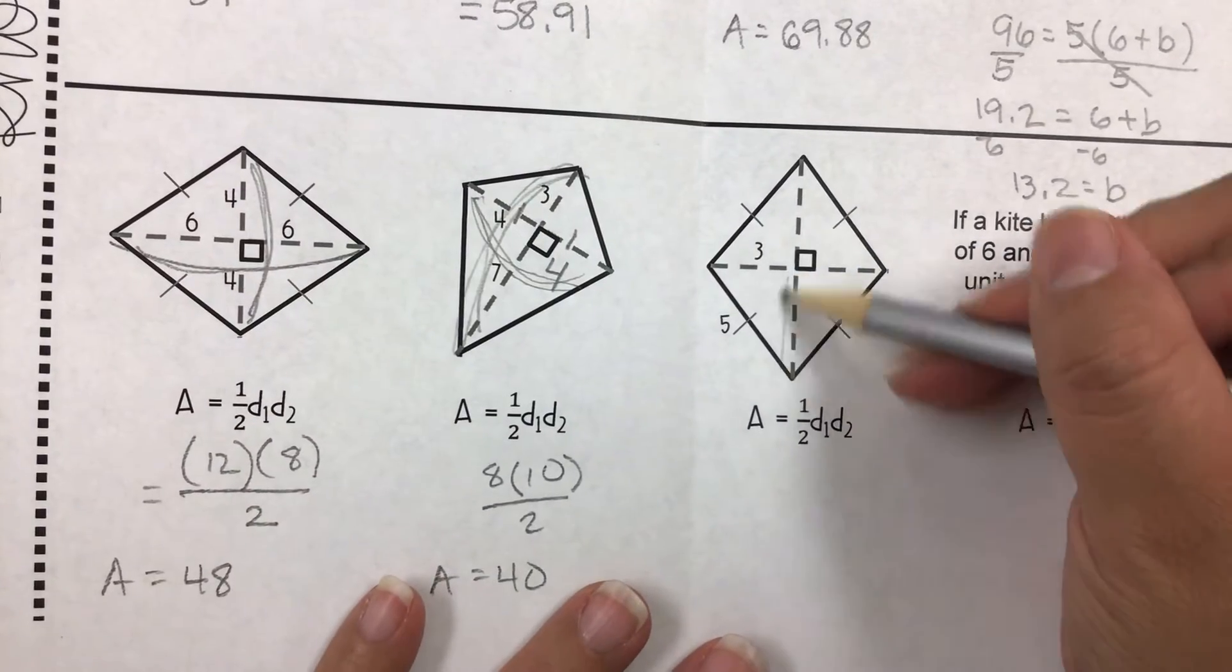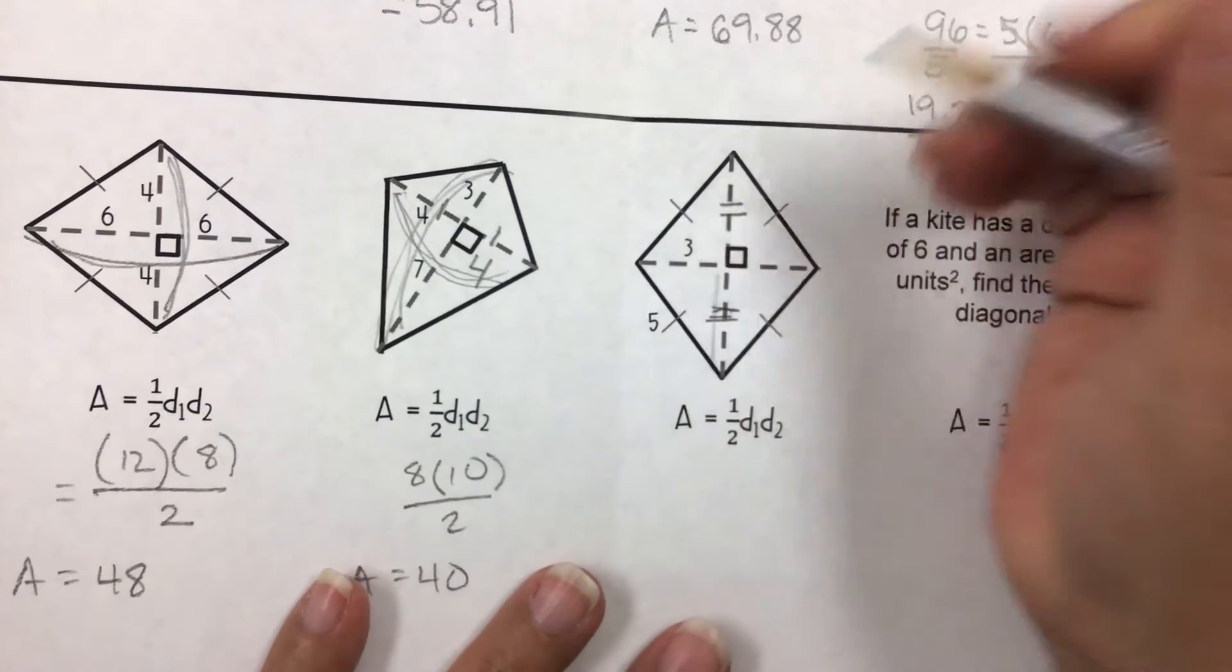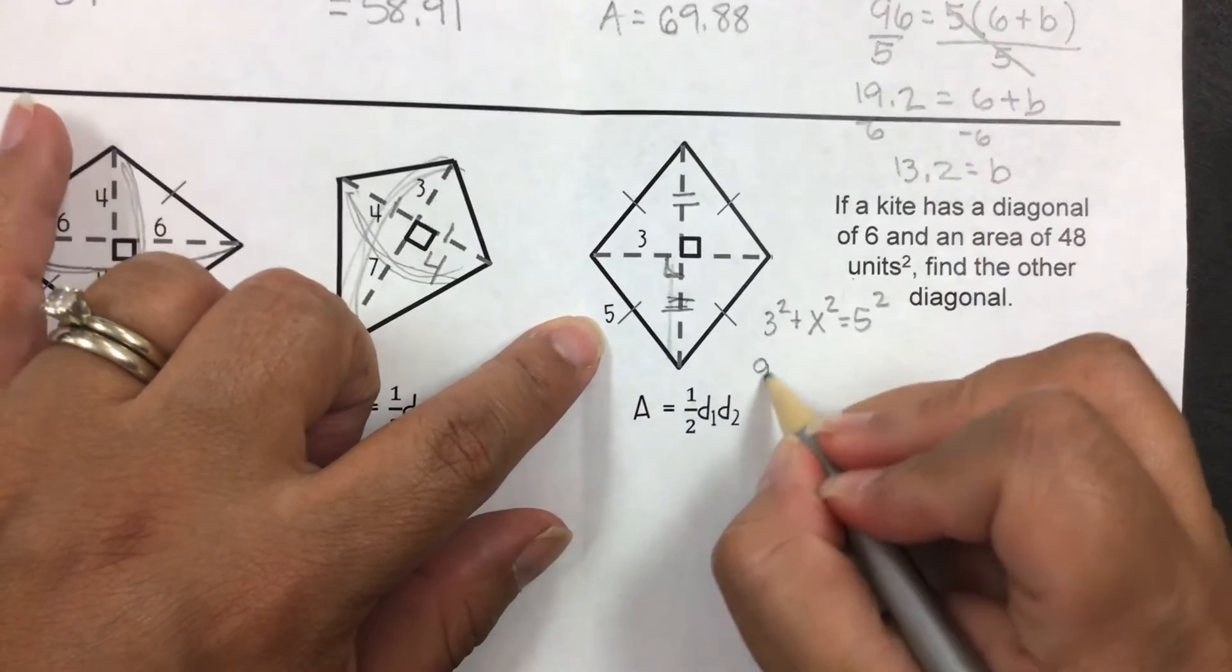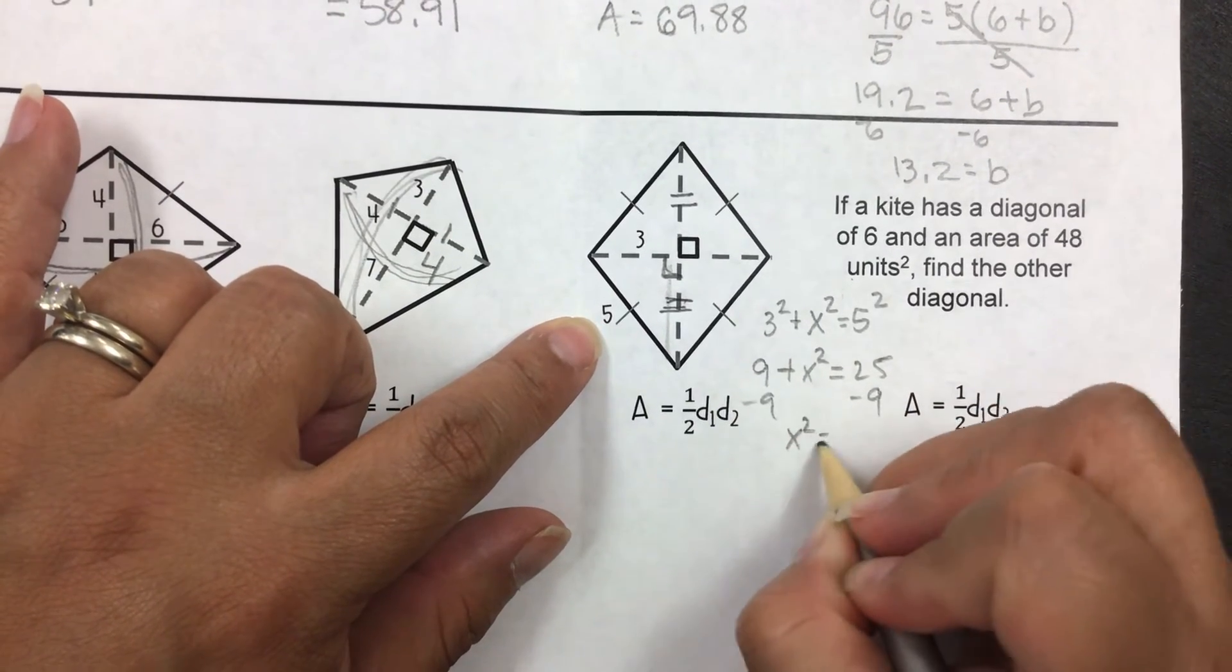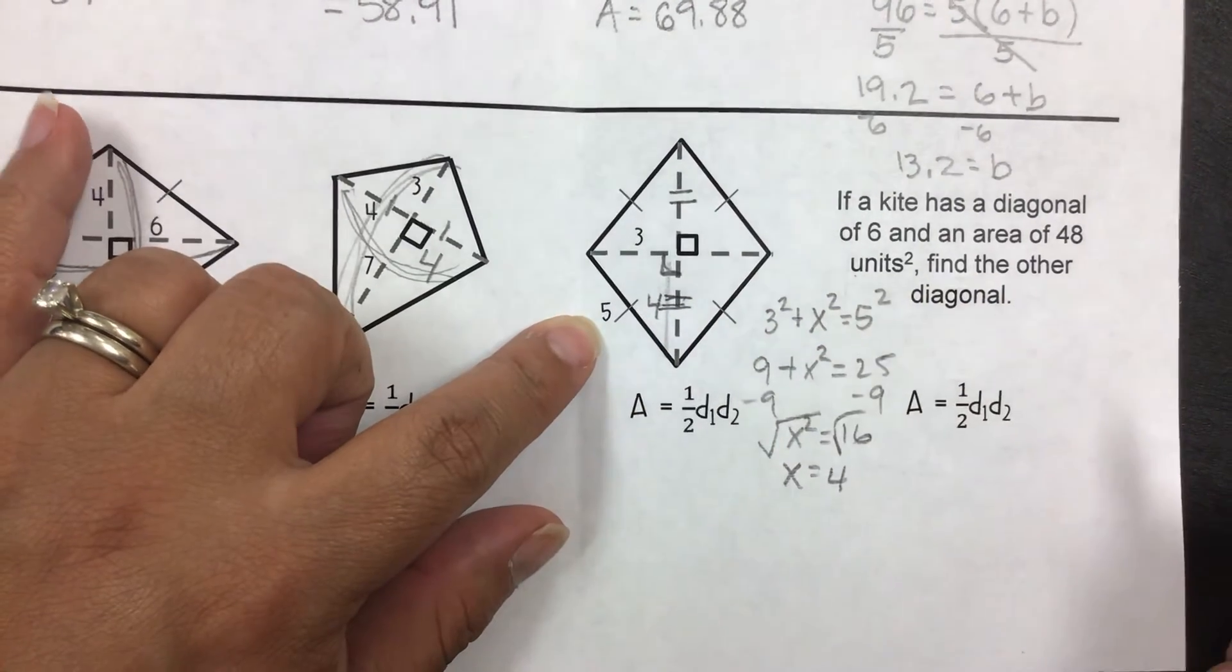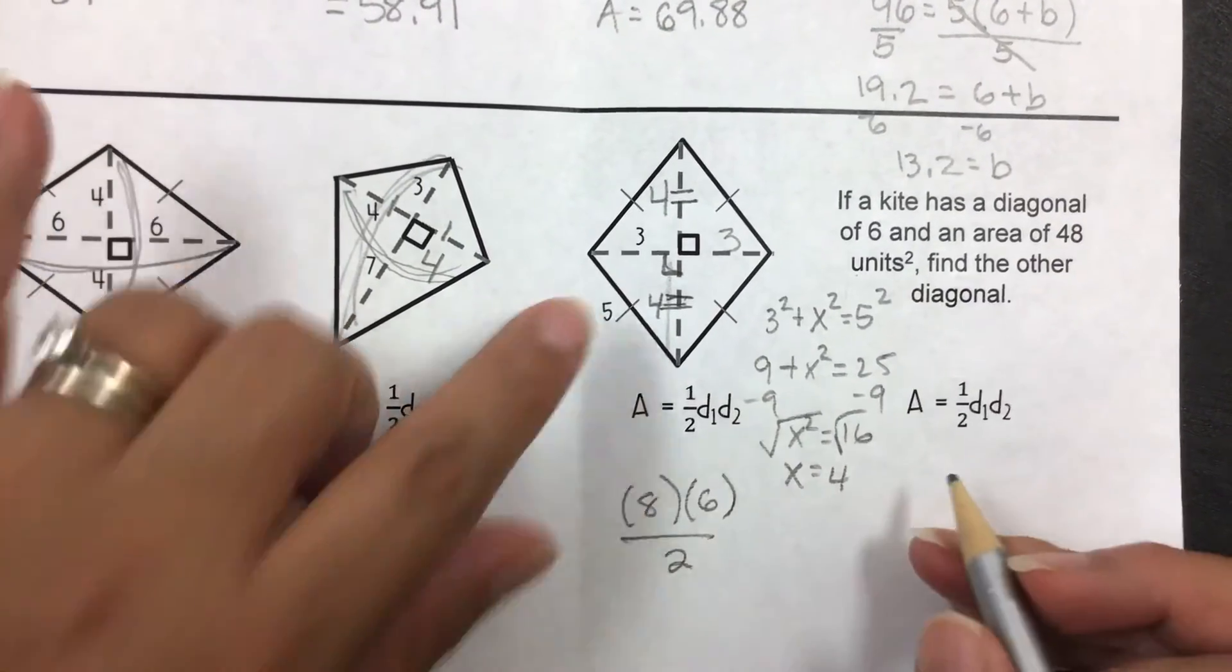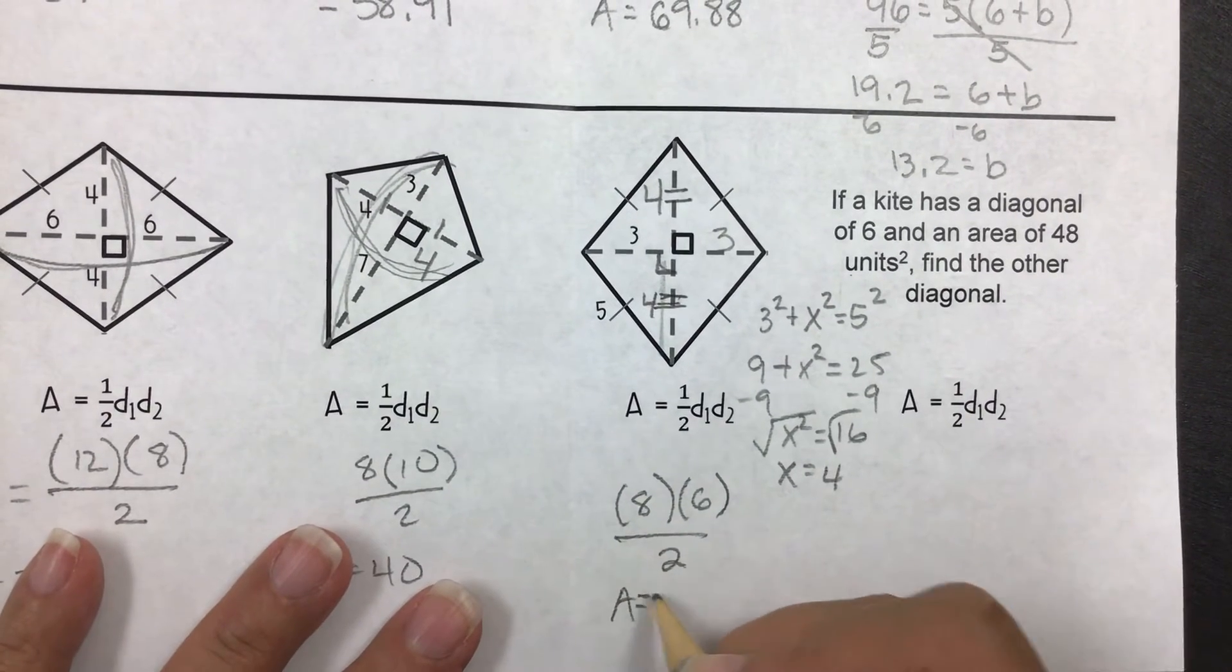On here, we don't have this measurement, but it is a rhombus. So whatever this measurement is right here, this one will be the same. So we're going to use the Pythagorean theorem. 3 squared plus, that's the right angle right here, so x squared is equal to 5 squared. That means this length right here is 4. That means this one is also 4. So you have one diagonal that's 8 and the other diagonal that is 6 divided by 2. The area is equal to 24.